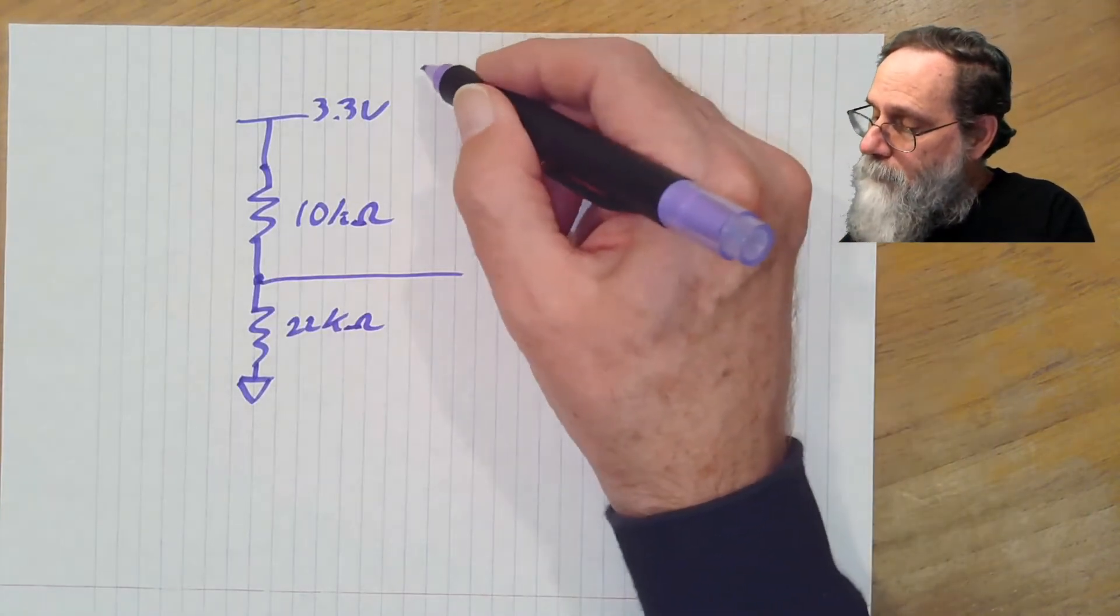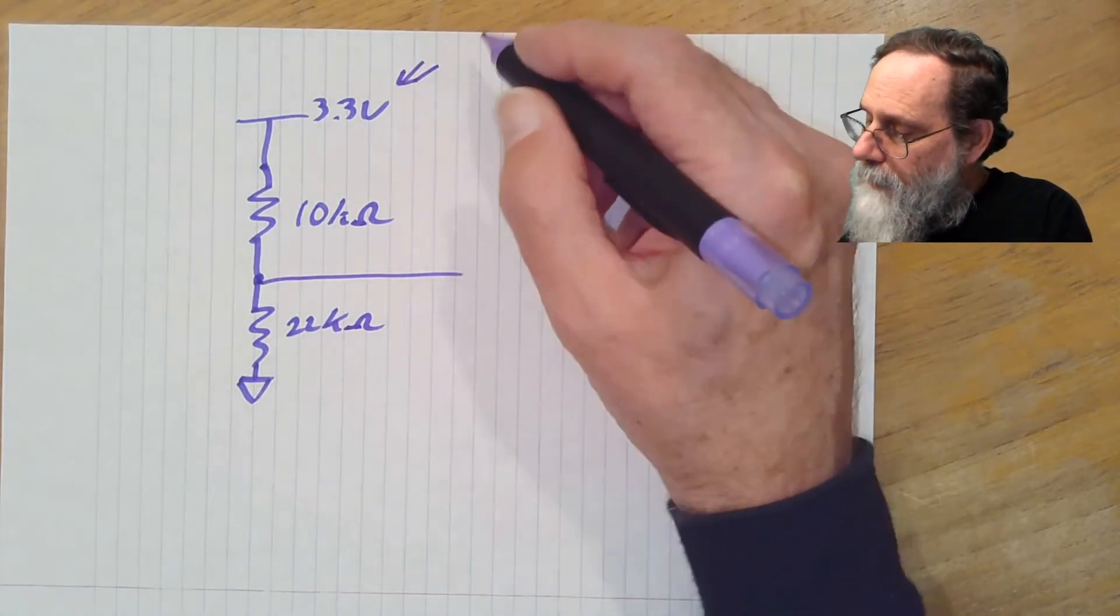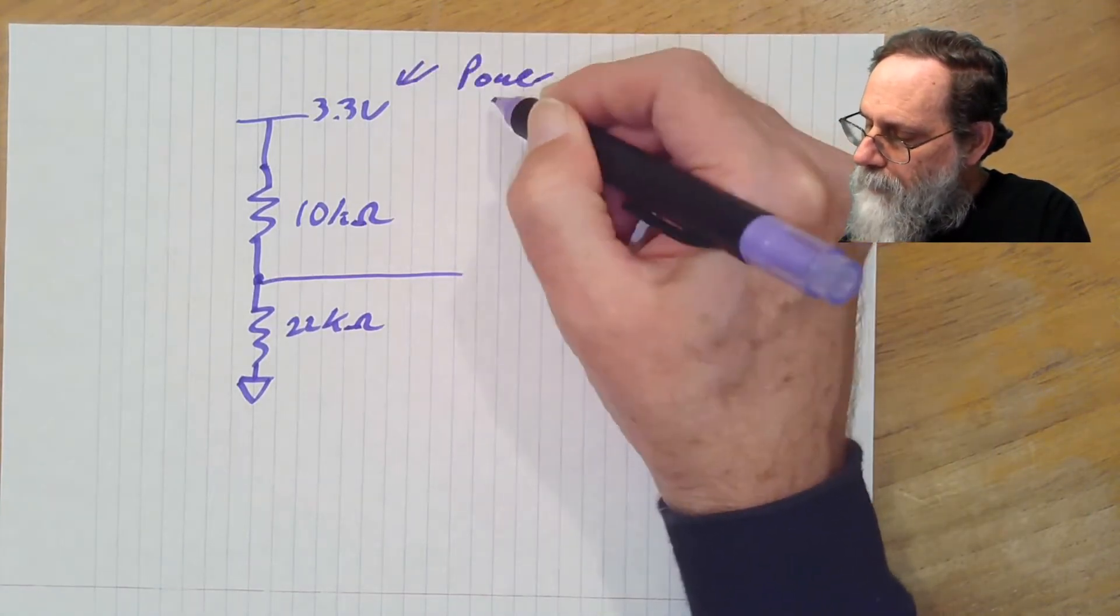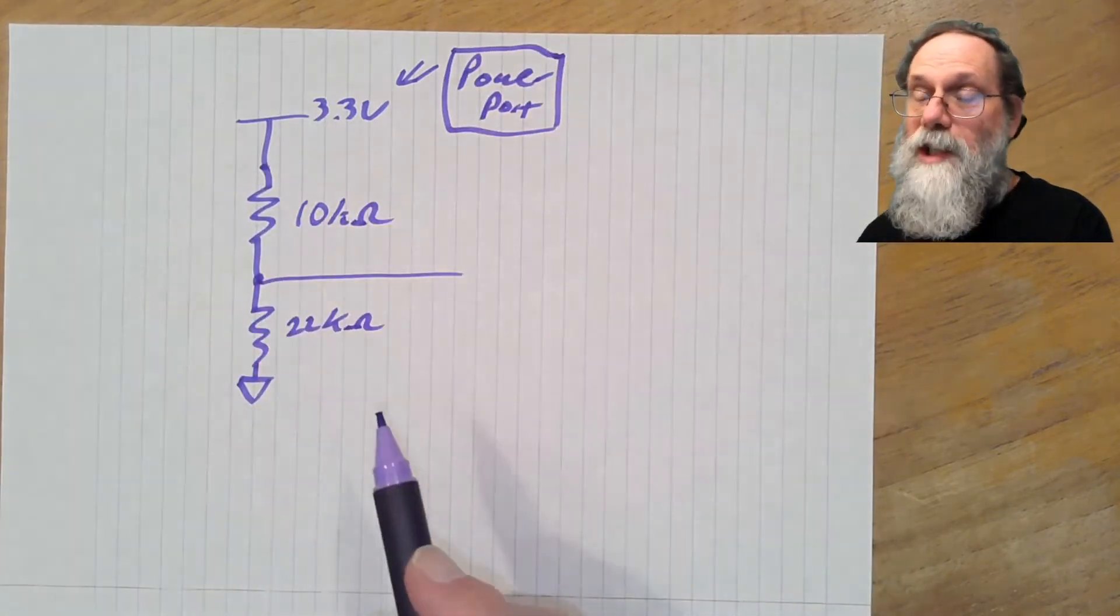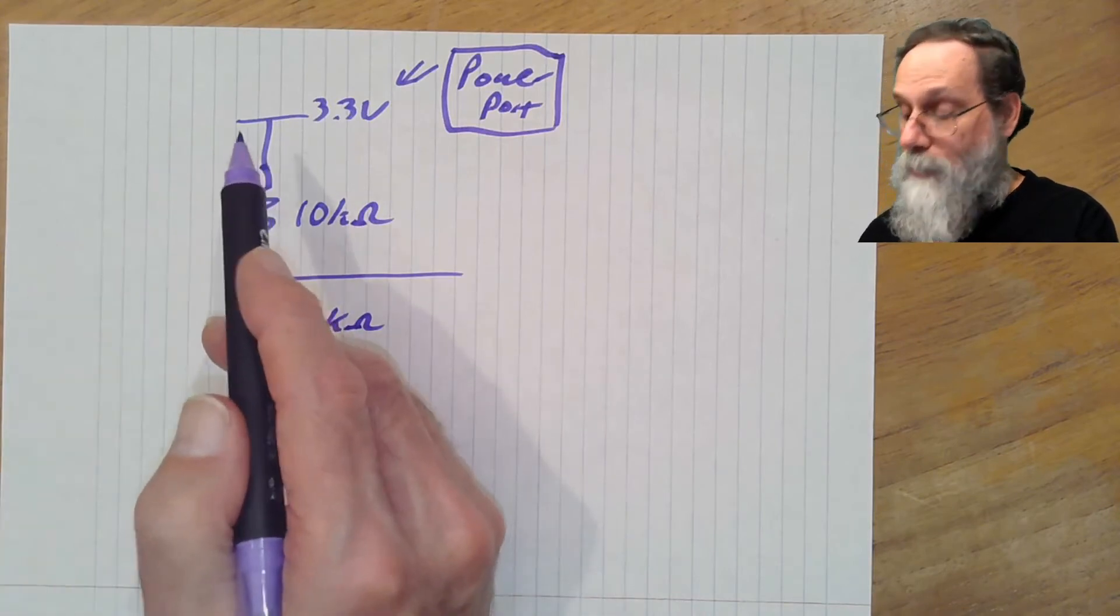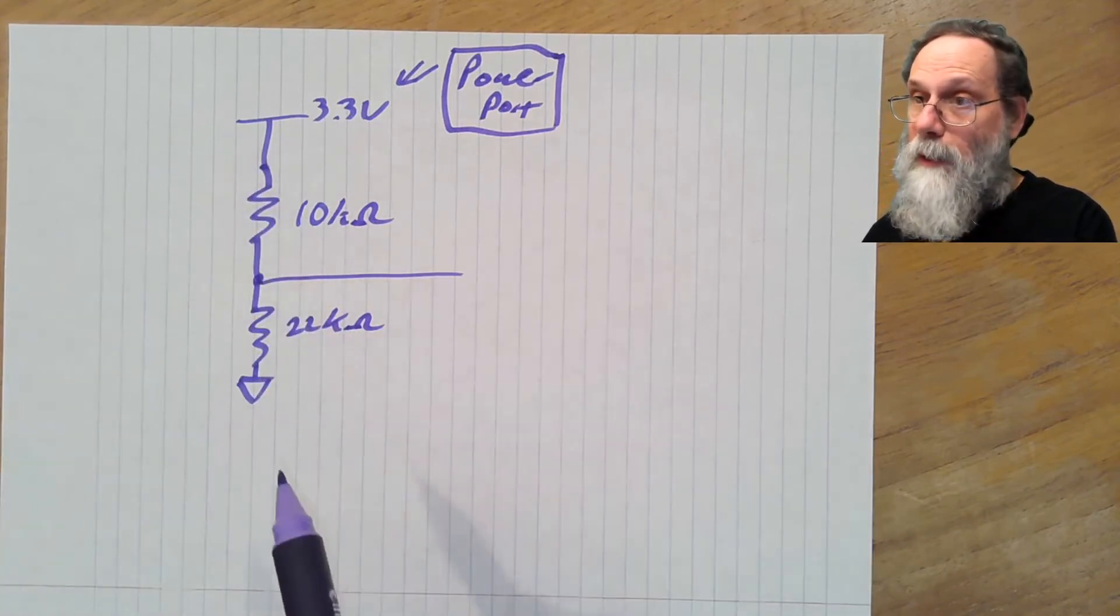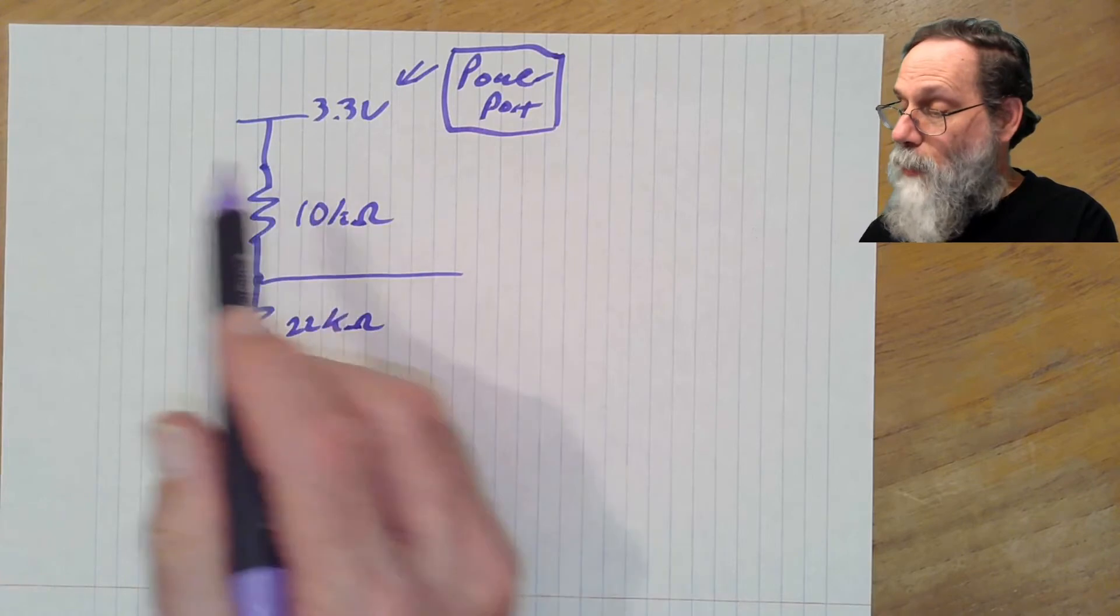Now, notice I've used a different port symbol here. This is a power port. And it's sort of T-shaped, and it's always done this way up, just like the ground is always a downward pointing arrow. We can't rotate either the ground or the power port symbols.